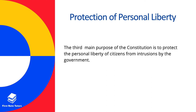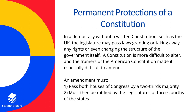The constitution also oversees the protection of personal liberty — its third main purpose is to protect the liberty of citizens from government intrusion. The constitution also provides for its own permanent protection. In a democracy without a written constitution, such as the UK, the legislature may pass laws granting or taking away any rights or even changing the structure of the government itself. However, the US constitution is far more difficult to alter — an amendment must pass both houses of Congress with a two-thirds majority and must also be ratified by the legislators of three-fourths of the states.